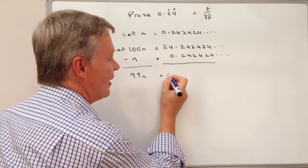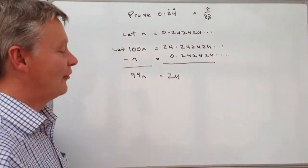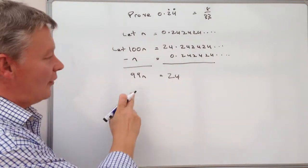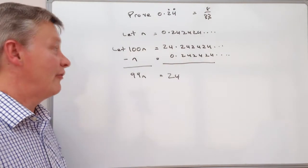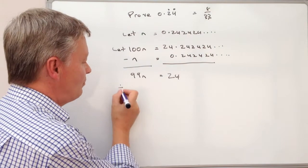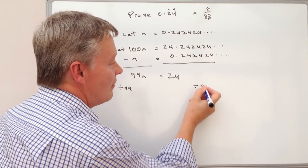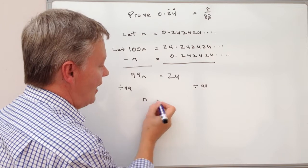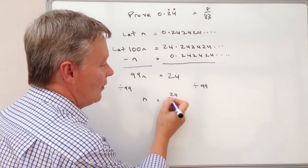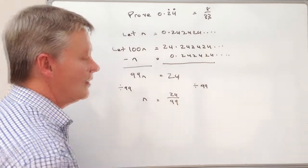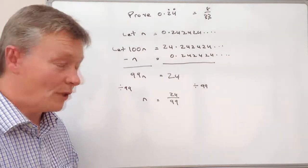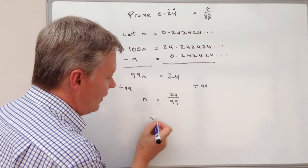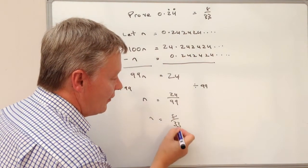Take one away from the other and actually I get left with 24. Well if I've got 99n equals 24 I've got a fairly simple equation. If I divide both sides by 99 it means I get a value of n. So n equals 24 divided by 99. And if I reduce that down by dividing the top and bottom by 3 I get n equals 8 over 33.